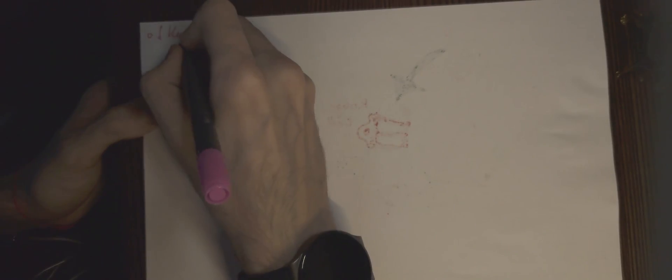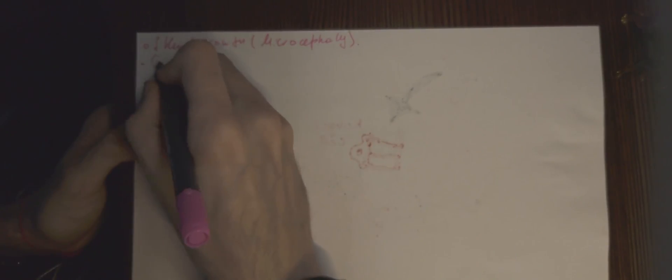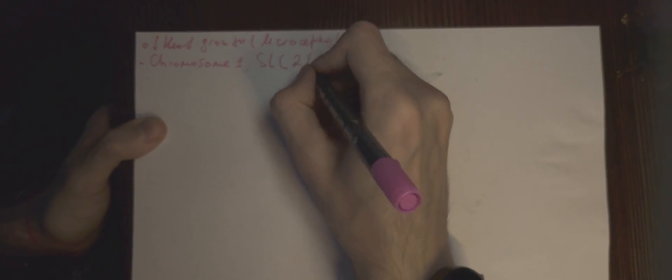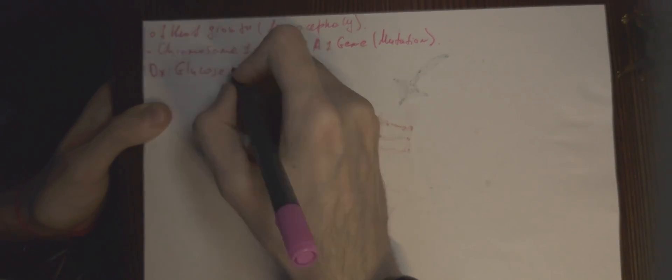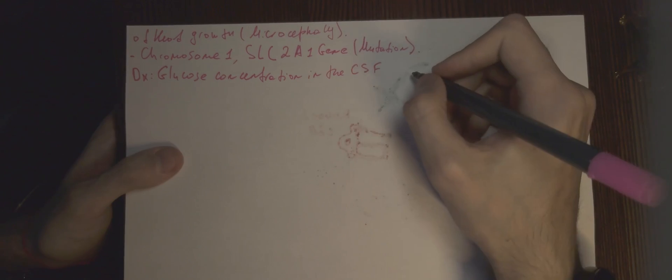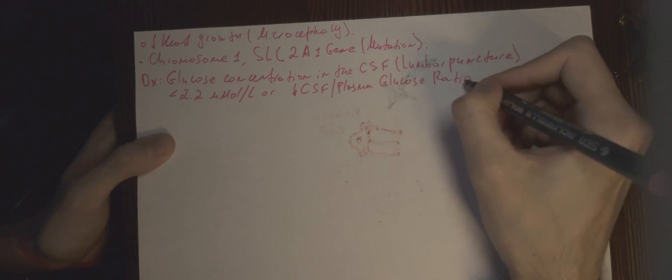Diagnosis is done via glucose concentration in the CSF, which is less than 2.2 mmol per liter, or low CSF to plasma glucose ratio, less than 0.4 mmol per liter. We can call it hypoglycorrhachia.